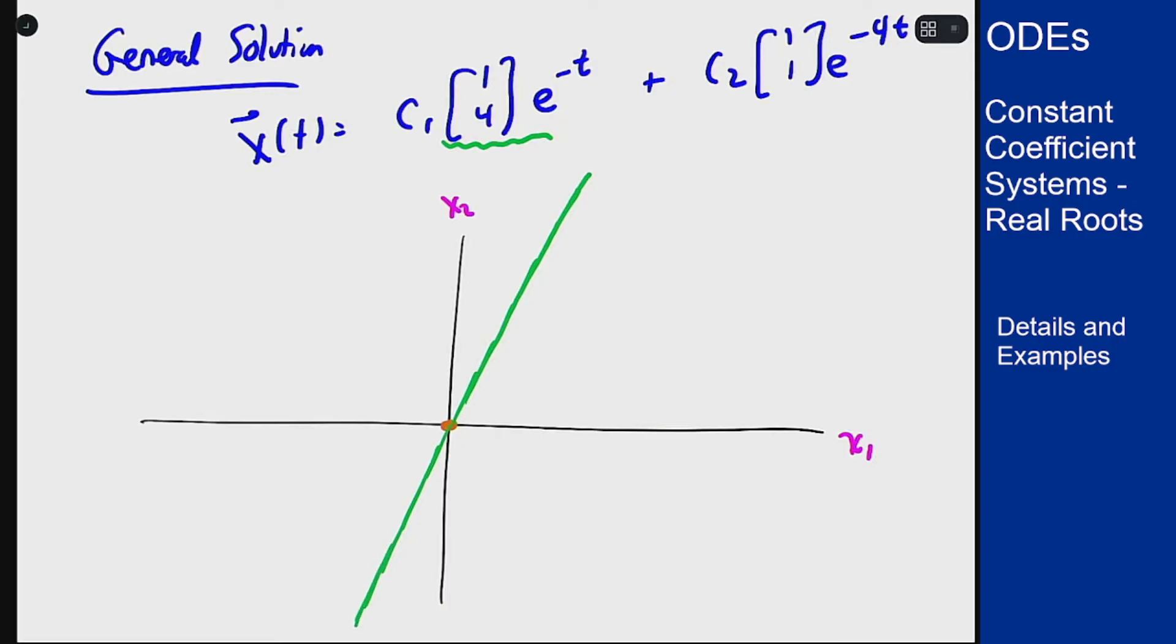Because it's e^(-t), I know if I start on that line I am tracking towards the origin, because as t goes on I will get closer and closer to zero.